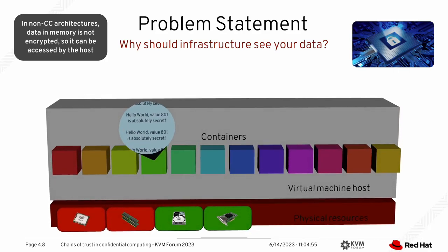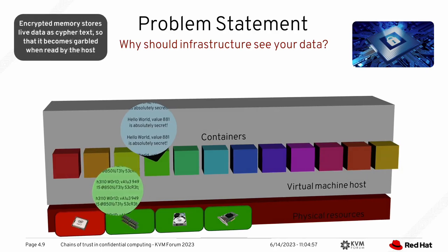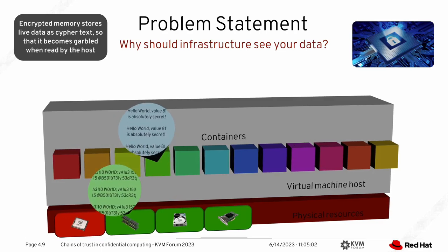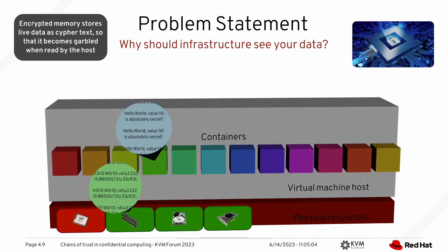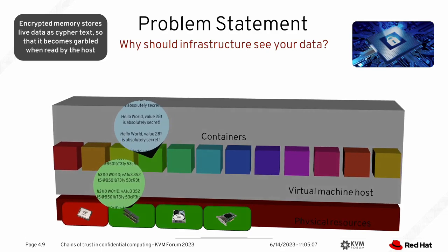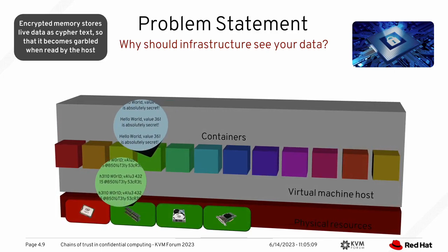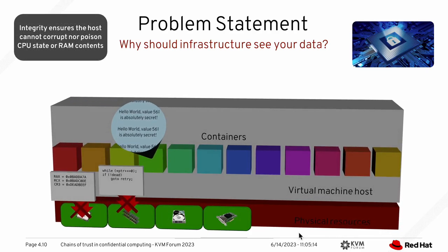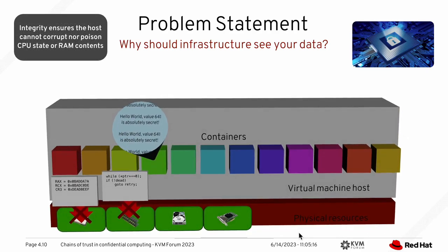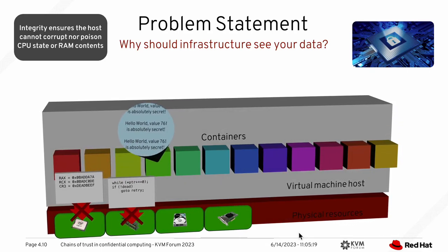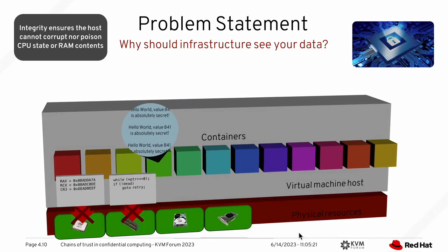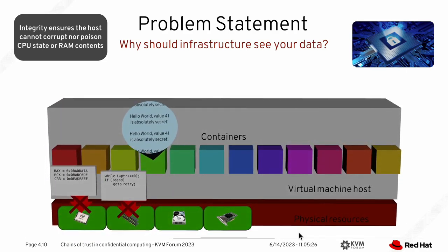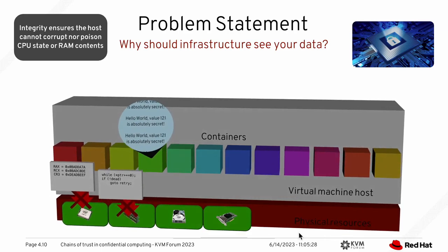For memory, the memory is essentially in the clear to anyone on the host. You can dump the QEMU process and see what's inside. With memory encryption, you have some kind of weak encryption — intentionally weak, but it at least protects against immediate tampering and data access. Other levels of protection include guarding against interrupt tampering or fault injection, and corrupting the CPU state. This is, for instance, the difference between SEV-ES and SEV.